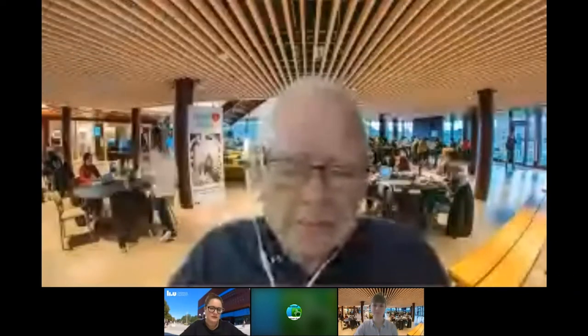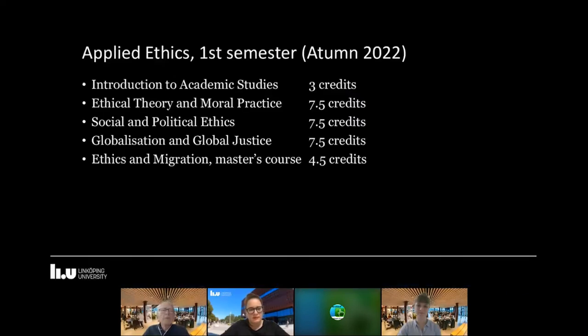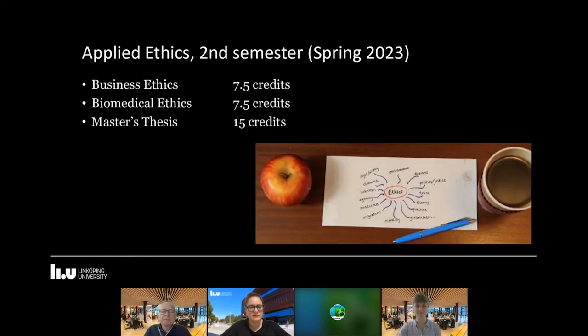Let me quickly say something about the curriculum of the program so we can see how it is structured. It covers different fields of Applied Ethics. There's a course on social and political ethics, a course on globalization and global justice, one course on ethics and migration. It starts with an introductory course on ethical theory and moral practice, so everyone taking the program can be on the same starting ground. Then in the second semester we continue with business ethics, one course in biomedical ethics, and in the last part of the semester students can write a master's thesis, going deeper into their own special interest in Applied Ethics.